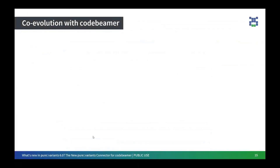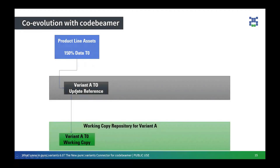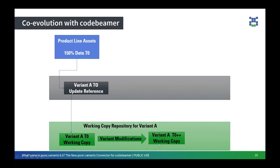I would now like to talk about another concept: co-evolution with CodeBeamer. This shows what happens if you make changes to your product line or to your variant copy. We have a product line called 150% T0. After performing a transformation, all the data goes to the update reference copy and you also get a Variant A T0, which is your current working copy. Let's say you make changes to your current working copy — for example, changing the value of an attribute specifically for the American market. That gives you a new variant copy called T0++.